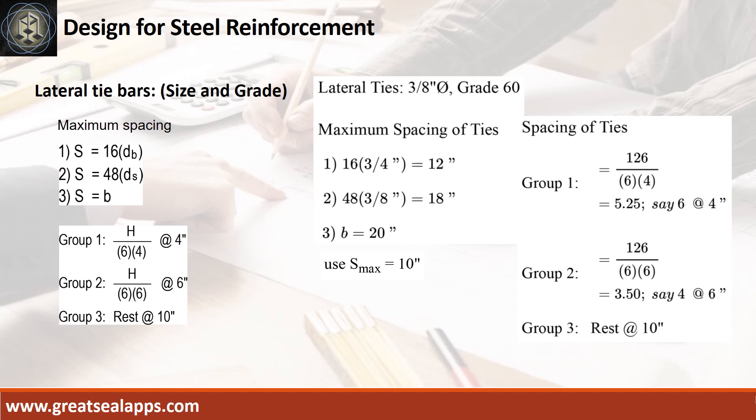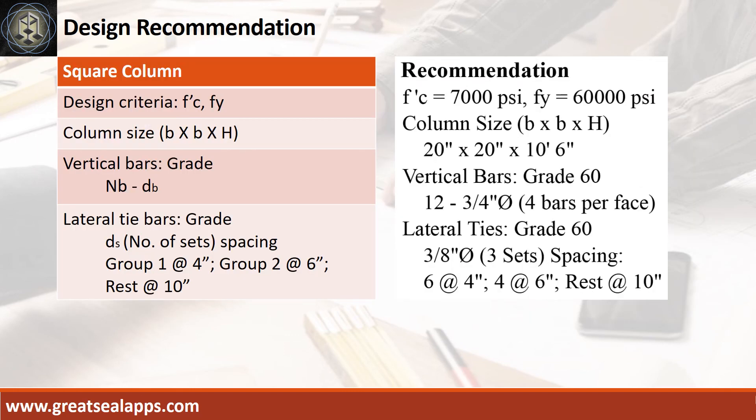Follow the given computations for lateral ties. Design recommendation as follows. Fc prime equals 7,000 psi, Fy equals 60,000 psi. Column size is 20 inches by 20 inches by 10 feet 6 inches. Vertical bars of grade 60, 12 pieces 3/4 inch diameter bar. Lateral ties of grade 60, 3/8 inch diameter 3 sets spacing, 6 at 4 inches, 4 at 6 inches, rest at 10 inches.